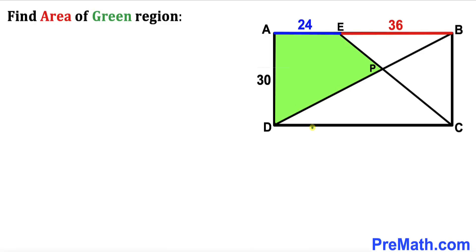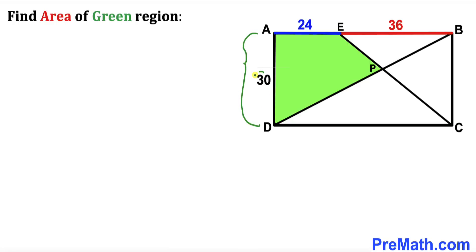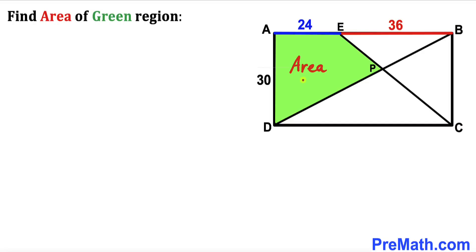Welcome to pre-math. In this video we have got rectangle ABCD along with diagonal BD and segment EC as shown in the diagram, such that they intersect each other at point P. The side length AD is 30 units, segment AE is 24 units, and segment EB is 36 units. Our task is to calculate the area of the green shaded region.